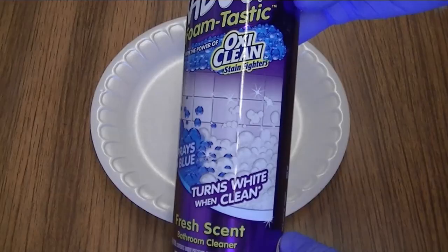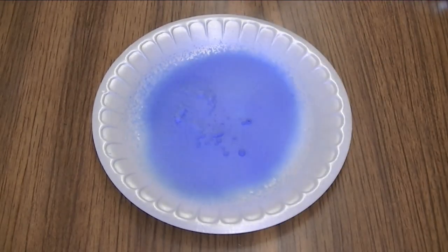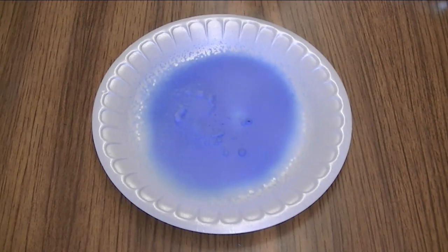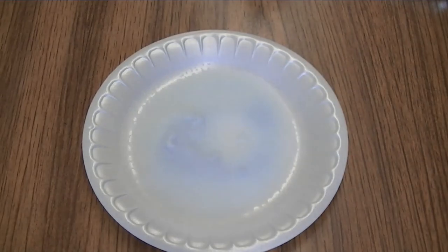First we'll take one of these cleaners such as the one that you see here that changes from blue to white. We spray some of the cleaner onto a disposable plate and we wait until the blue color fades to white. It goes a little more quickly if you exhale onto the blue foam.